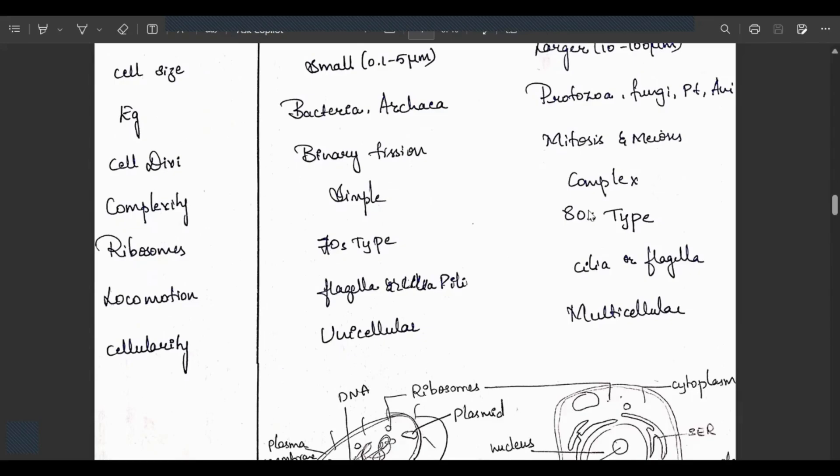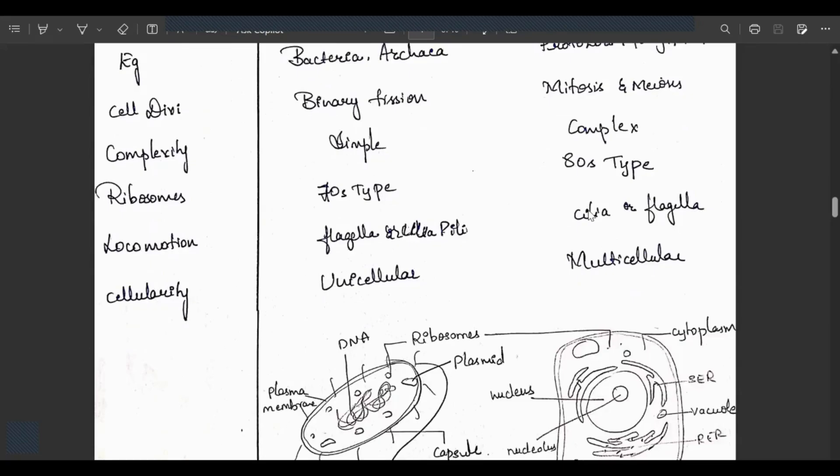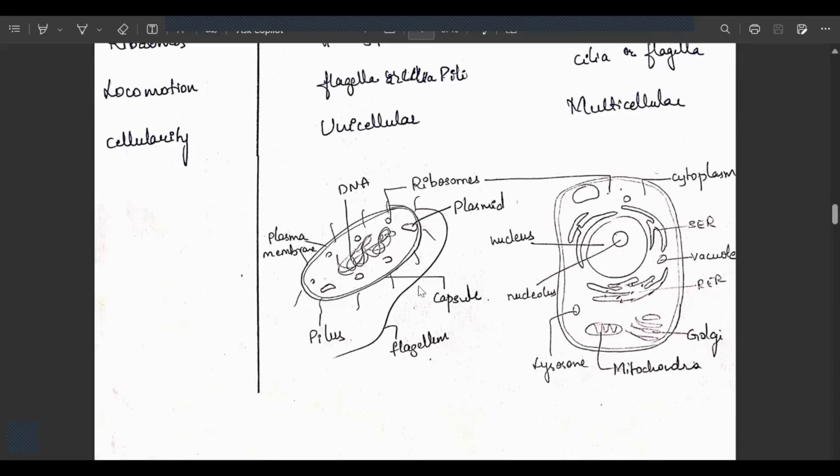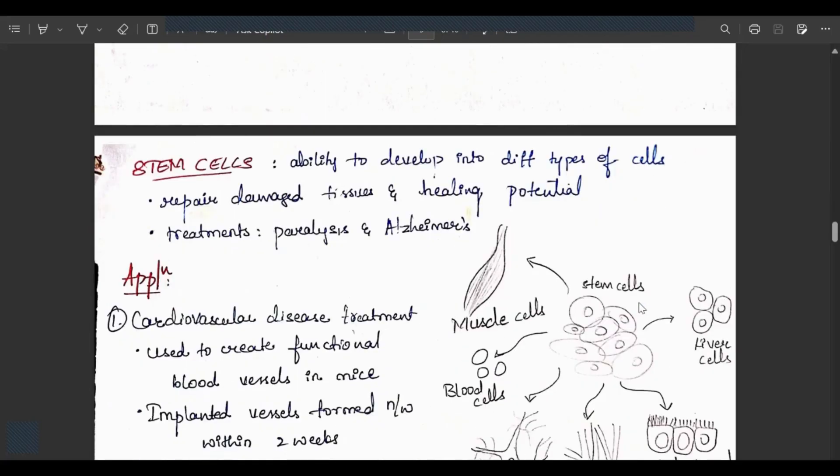Cell division done by binary fission in prokaryotic, by mitosis or meiosis in eukaryotic. Complexity is simple in prokaryotic, complex in eukaryotic. Ribosomes are 70S type in prokaryotic, 80S type in eukaryotic. Locomotion by flagella or pili in prokaryotic, cilia and flagella in eukaryotic. Cellular activity: prokaryotic is unicellular, eukaryotic is multicellular. You have to write the diagrams in biology to score.